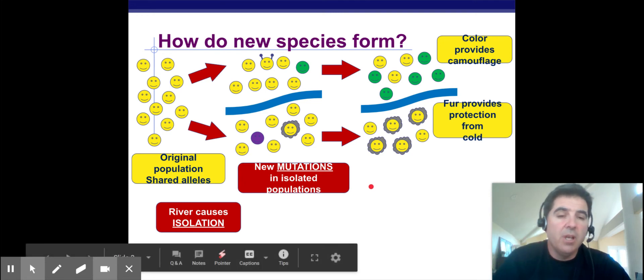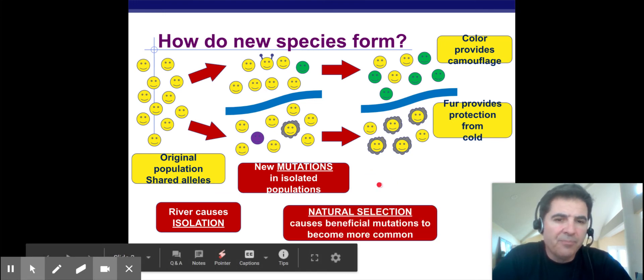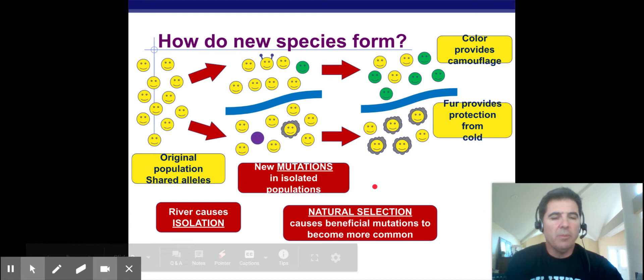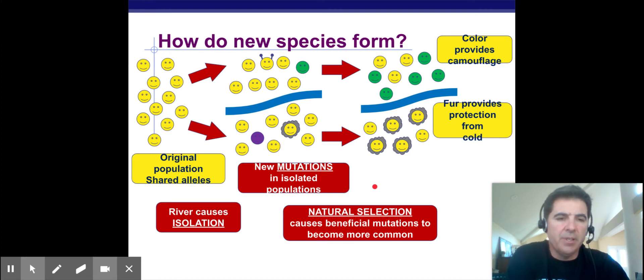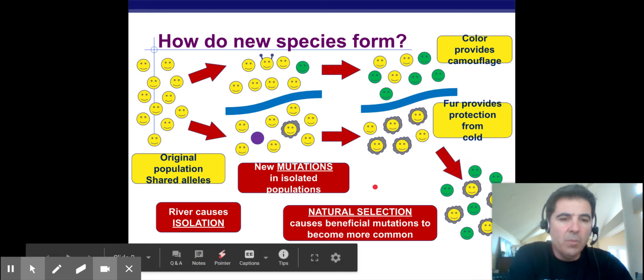Let's say the environment favors the green, the color provides camouflage, and the other environment maybe it's cold and it favors the furry one. So over time these things will, by the process of natural selection, become more common on the south side of the river and on the north side of the river.